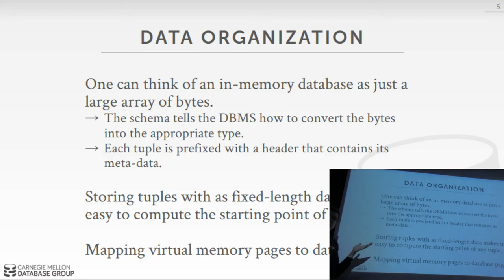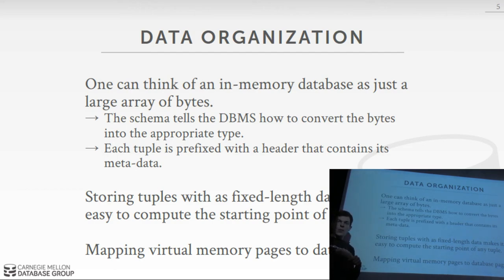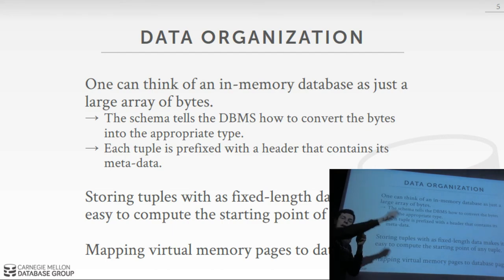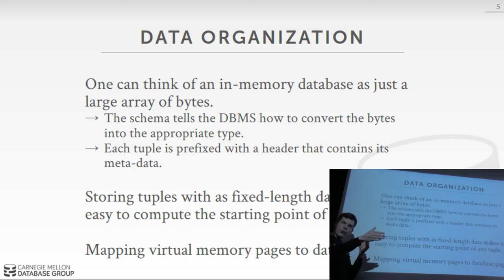Because of this, we don't have to have an extra indirection layer like in a disk-based system. In a disk-based system, the index gives you a page number and slot number, then inside the page you look up the slot array to find the offset for the tuple — an extra lookup step. In our case, we can go directly within the block to the offset we need.